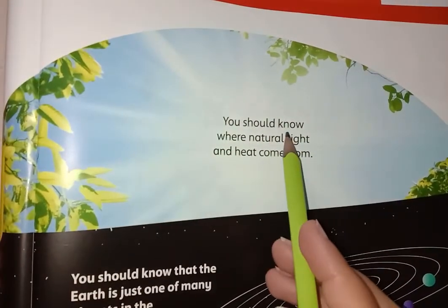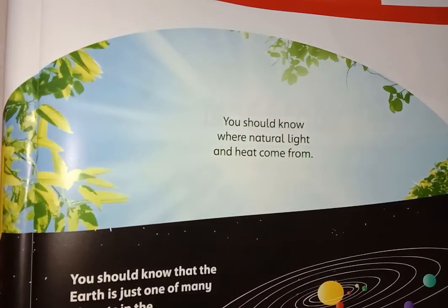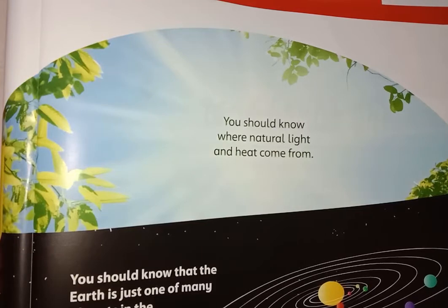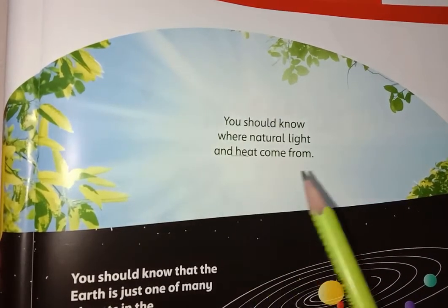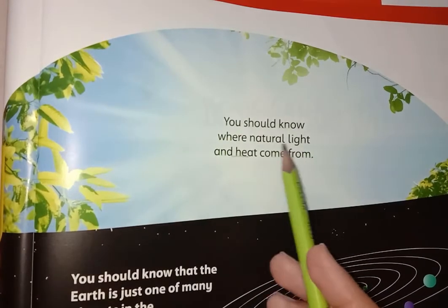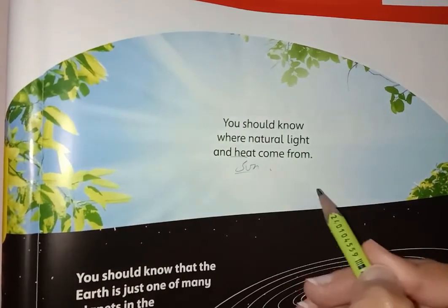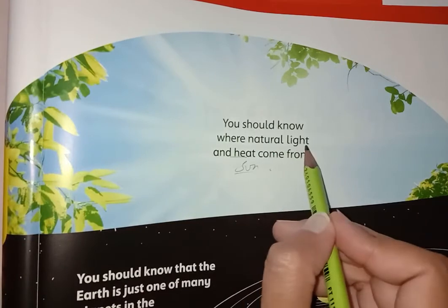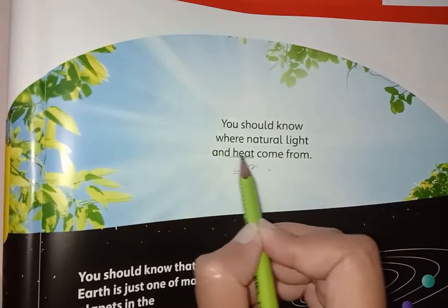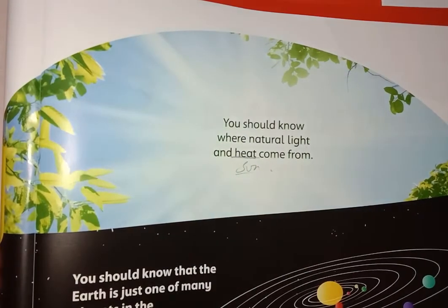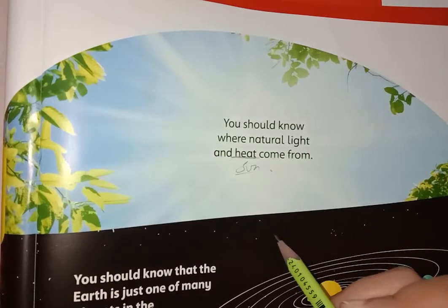You should know where natural light and heat come from. Natural light means the daylight, the sunlight. And heat — where does it come from? Natural light and heat both come from the sun. The sun is their source, because the sun gives us natural light so we can see in the daytime, and gives us heat so we can feel warm. The sun is a source of heat and sunlight.